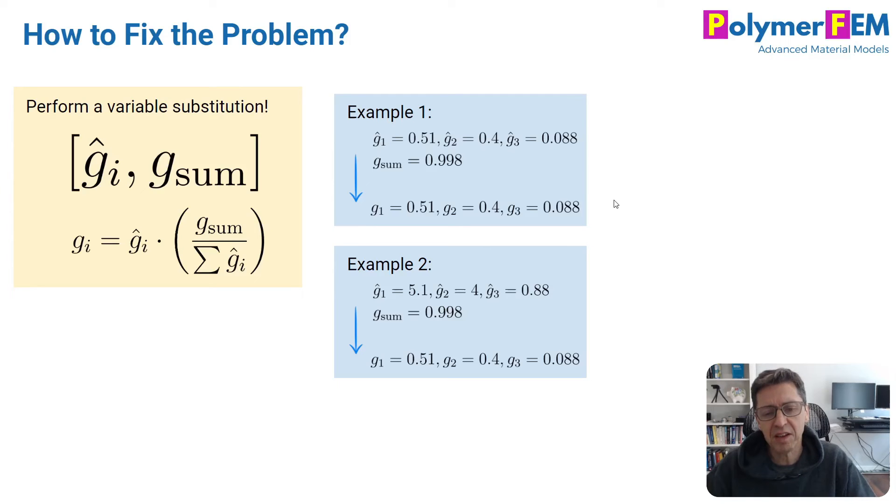And this is purposely the case. There is no limit on what the g hat values can be. And the only thing that matters is the relative size of them. And the actual magnitude of them is given by this final parameter.